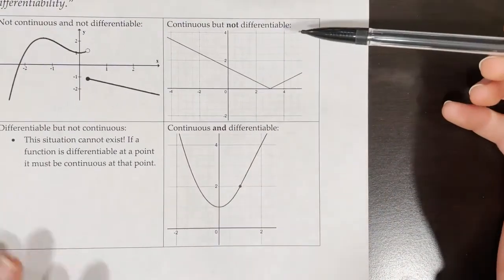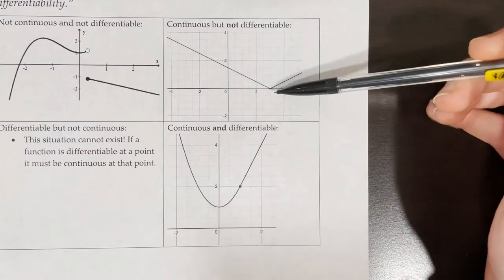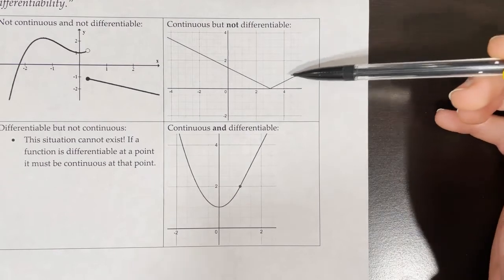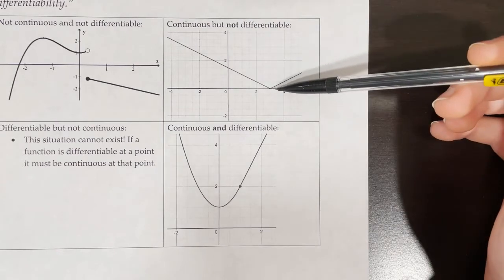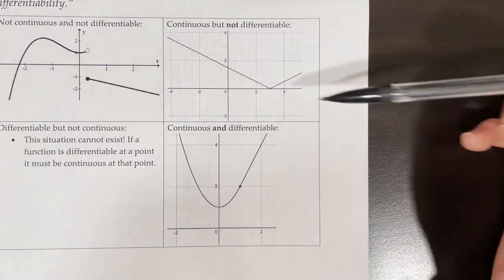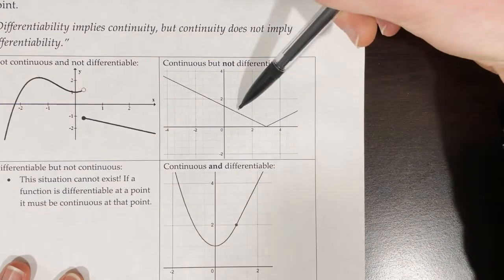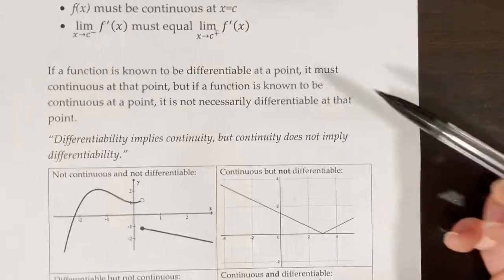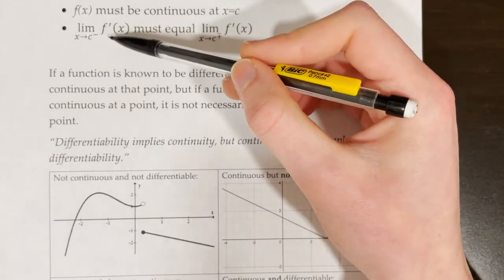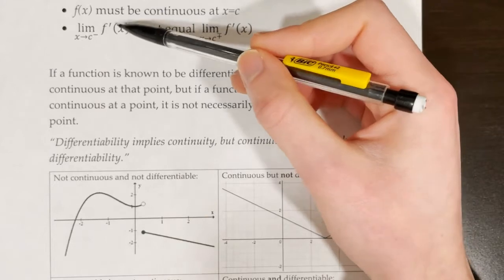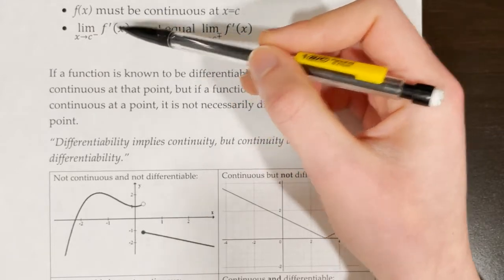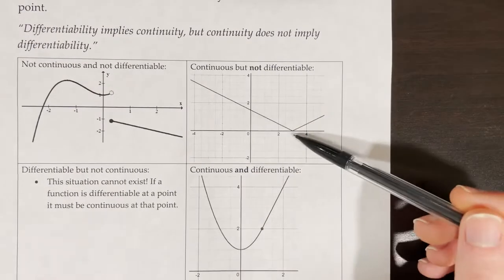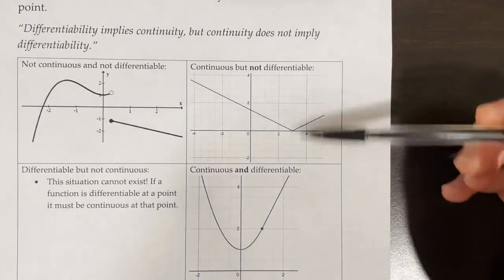This is an example of a function that is continuous but not differentiable at the point x equals 3. It is continuous, but it's not differentiable because we have what's called a corner in the graph. If we think about the slope of the tangent line from the left side, it's not the same as the slope of the tangent line from the right side. One of our conditions is that the limit as x approaches c from the left of f prime of x has to equal the slope of the tangent line on the right. So even though this function is continuous, it's not differentiable at x equals 3.